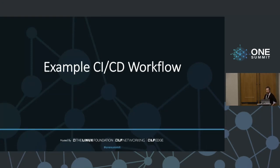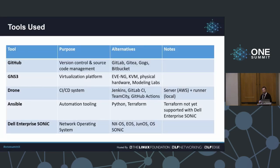So that was walking through our example workflow. The tools used were GitHub for version control, GNS3 for the virtualization platform, Drone as the CI-CD system — running the server in AWS and the runner in my local lab environment — Ansible for the automation tooling, and Dell Enterprise SONiC for the network operating system. The point here is not to be prescriptive; this is just to get you up and running with a basic CI system for automating networks.